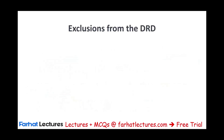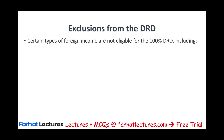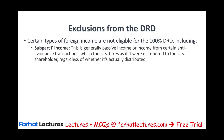There are certain types of income that are excluded from the 100% DRD. We'll cover each one of them separately in a separate recording. For example, Subpart F income — this is passive income or income that contains certain anti-avoidance transactions. Those don't qualify for the 100% DRD. You cannot have passive income and get the DRD; you have to pay taxes on those regardless of whether the money is distributed or not.